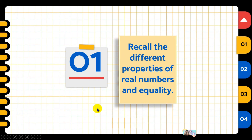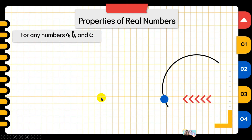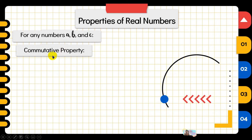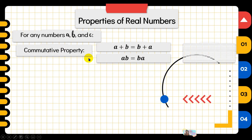So in this video, we're going to recall different properties of real numbers and equality and also apply the different properties in geometry. Let's have our first objective: recall the different properties of real numbers and equality. For any numbers A, B, and C, the first property is the commutative property. We have commutative property in addition and also in multiplication.